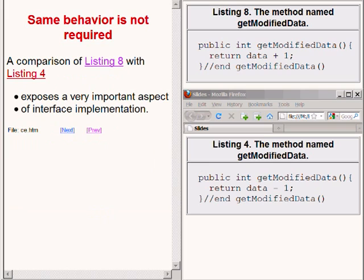The code now showing on the bottom right of your screen is the definition of the method named getModifiedData as it was defined in the class named prob05MyClassA. A comparison of the two versions of the method named getModifiedData exposes a very important aspect of interface implementation.